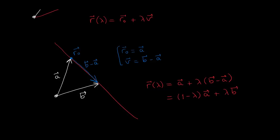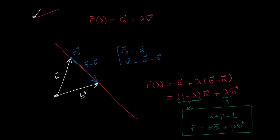Notice that we can rewrite this in the following way, and if we rename our parameters — for example alpha and beta — then as long as alpha plus beta equals 1, we can write the equation of a line as r equals alpha a plus beta b. This equation is particularly pleasant because it puts vectors a and b on equal grounds, and we have a linear combination of them with a certain restriction in the coefficients.